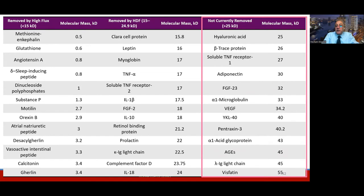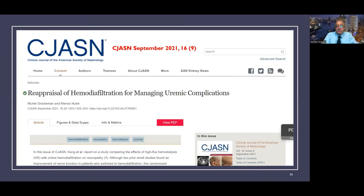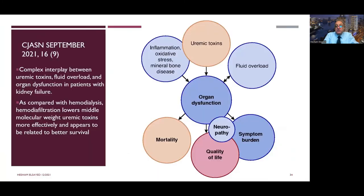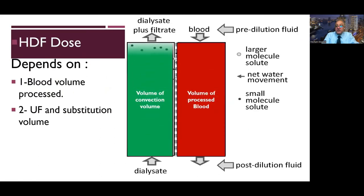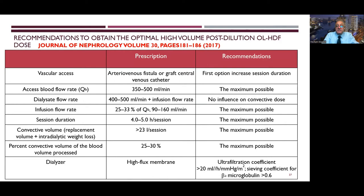Beyond beta-2 microglobulin, there are hundreds of uremic toxins larger than beta-2 microglobulin that should be removed by dialysis. Hemodiafiltration lowers middle molecule weight uremic toxins more effectively than hemodialysis, including reducing organ dysfunction, inflammation, and oxidative stress. The clinical effect of hemodiafiltration depends on convection volume, blood flow, and substitution volume used, and there is an urgent need to improve vascular access to maximize possible doses.